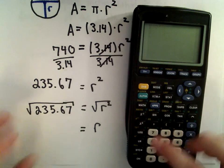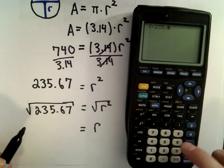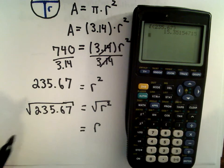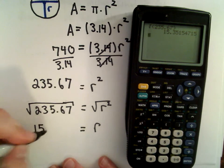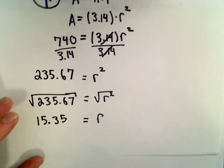So let's see here. I'm going to take the square root of 235.67. I'm getting that to be 15.35 after rounding. So that's the radius.